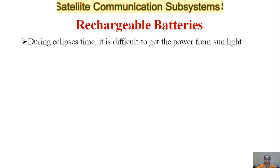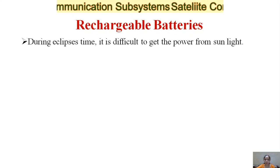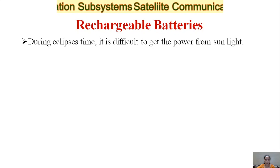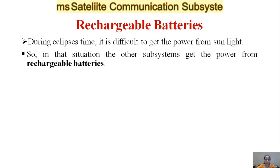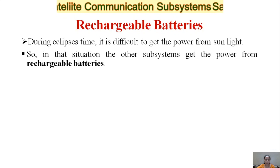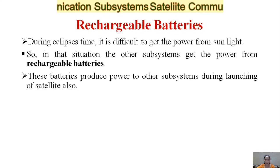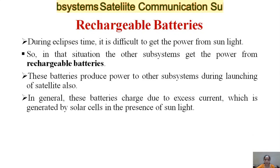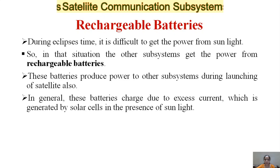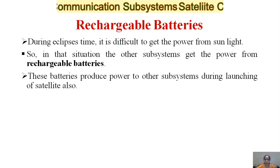The next component is rechargeable batteries. During eclipses it is difficult to get power from sunlight, so the satellite draws power from rechargeable batteries instead. These batteries also provide power to other subsystems during the launching of the satellite. In general, the batteries are charged by the excess current generated by solar cells in the presence of sunlight.